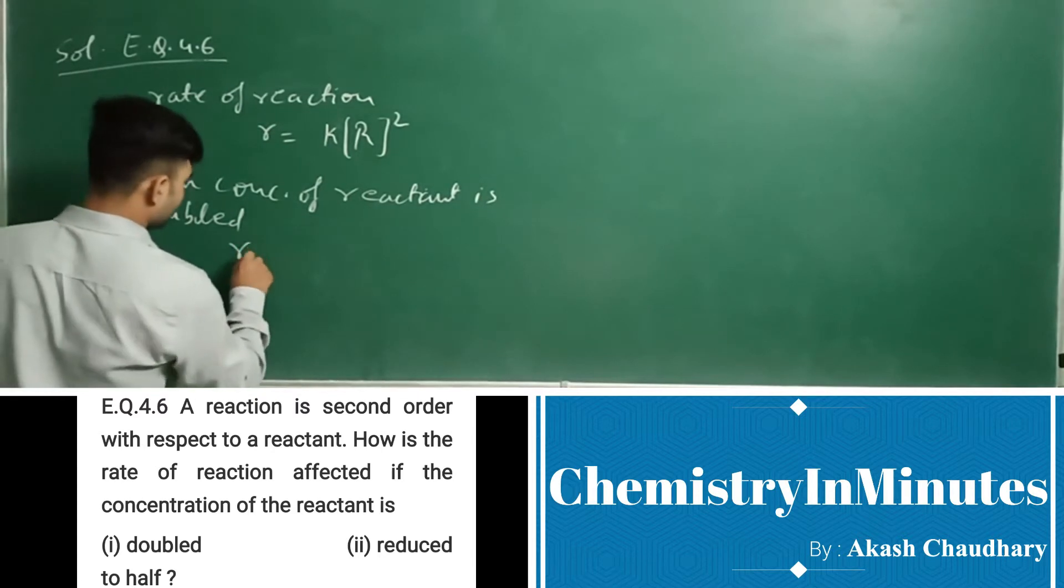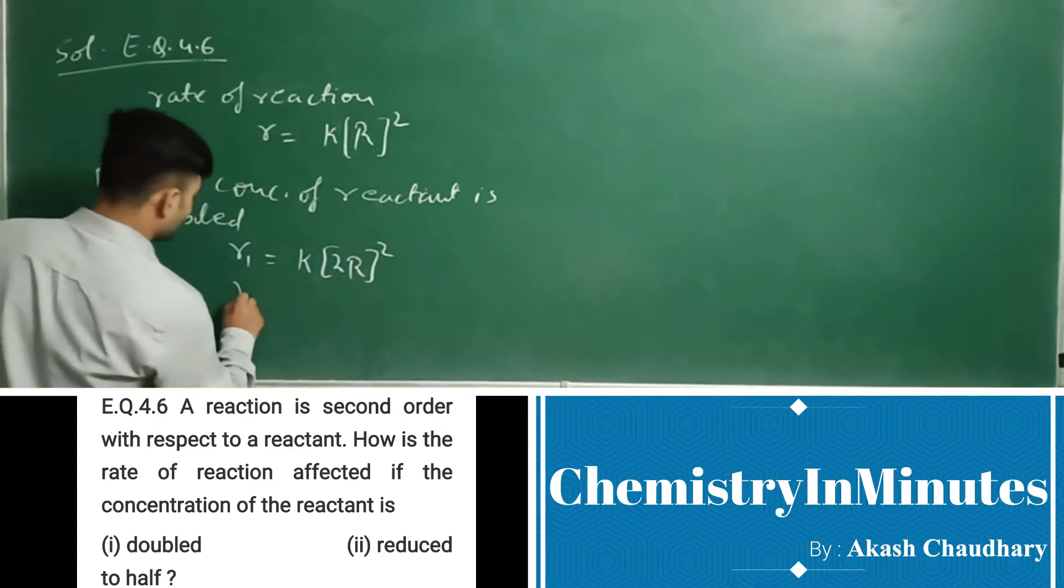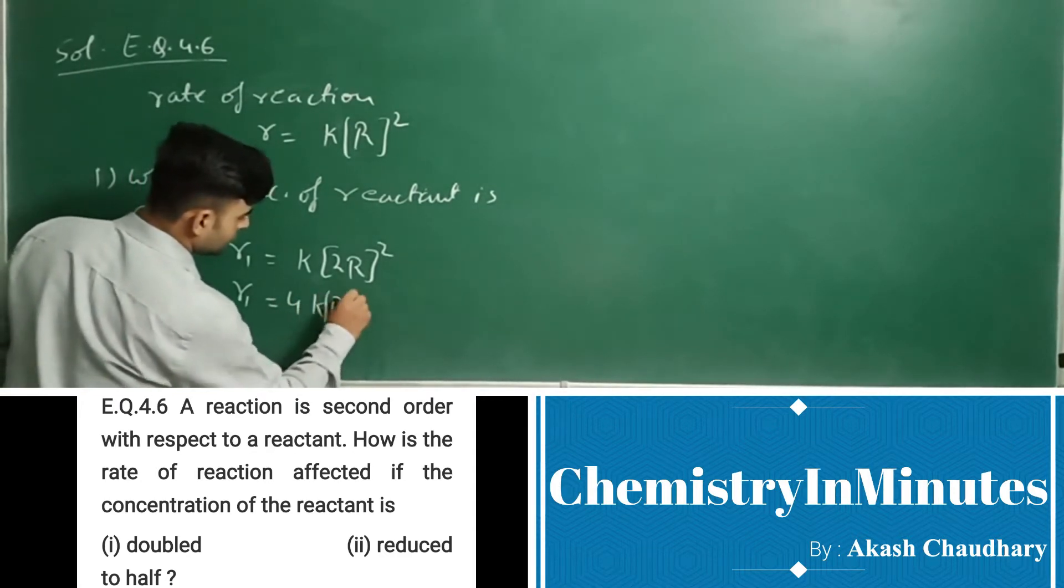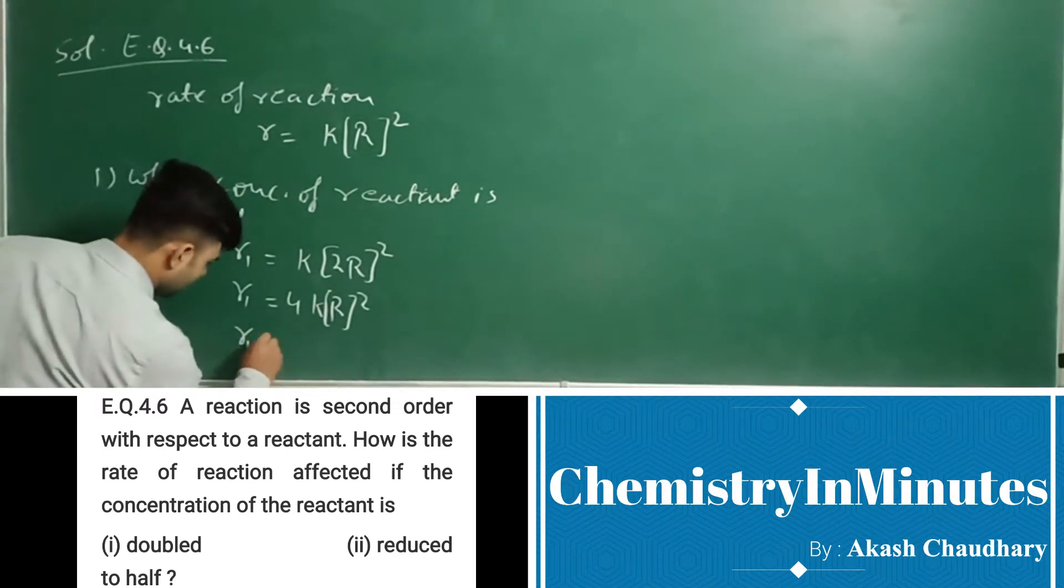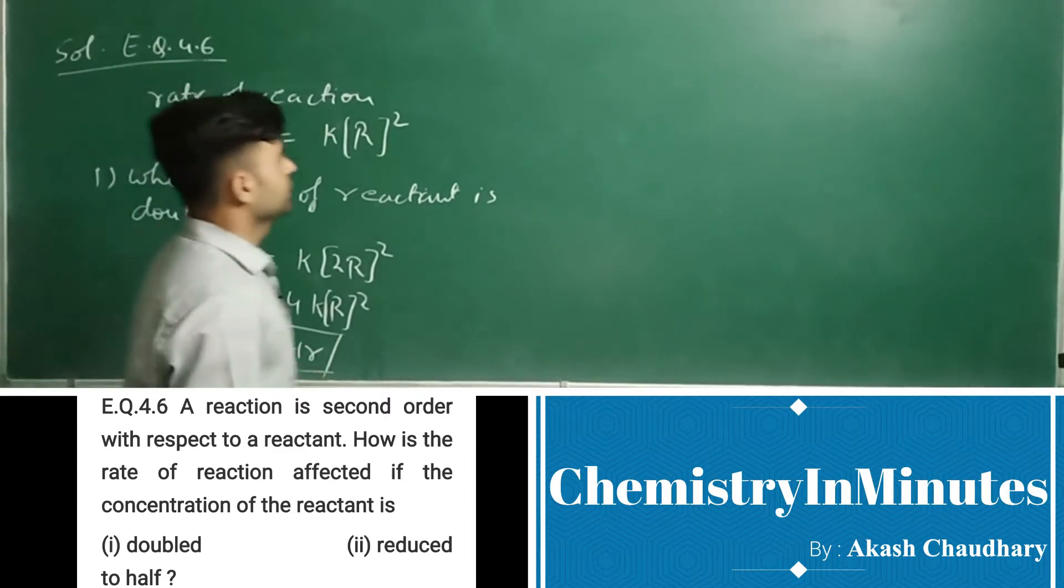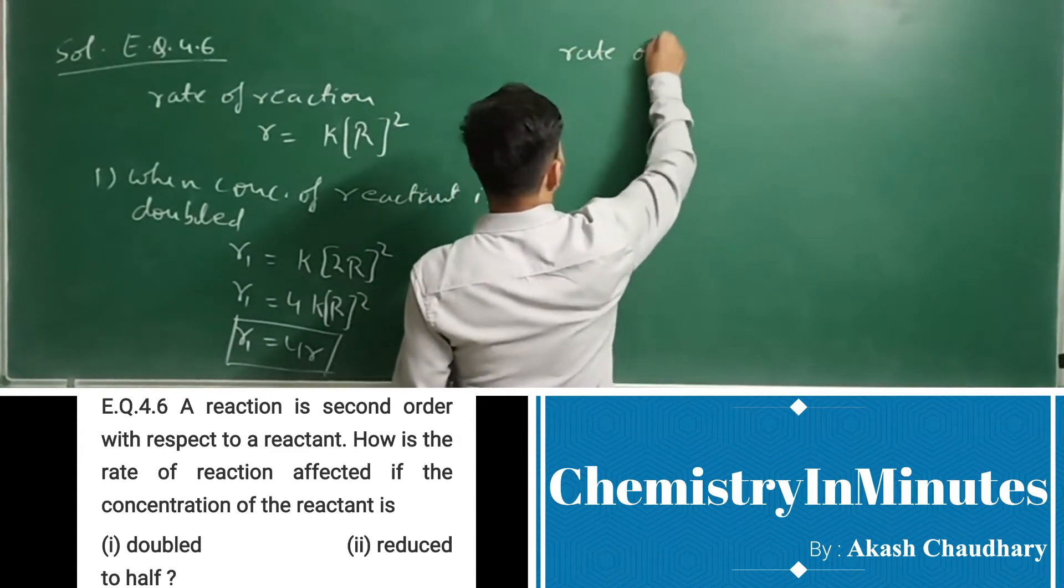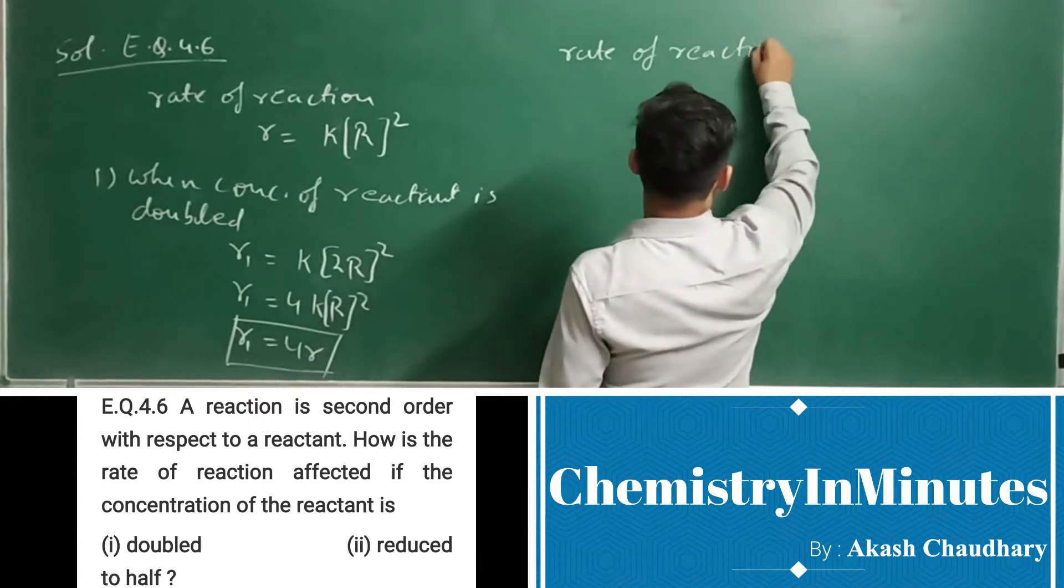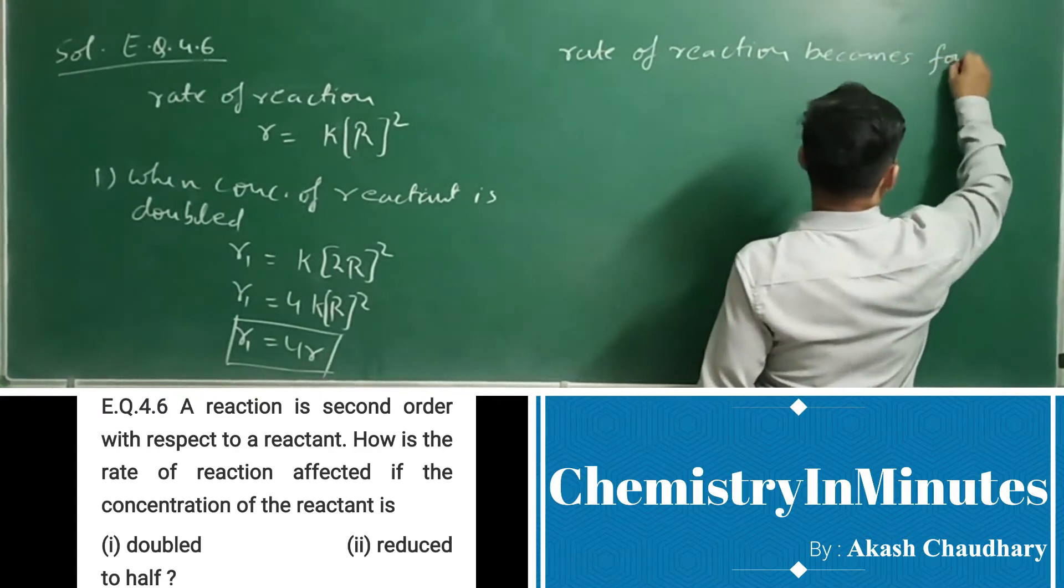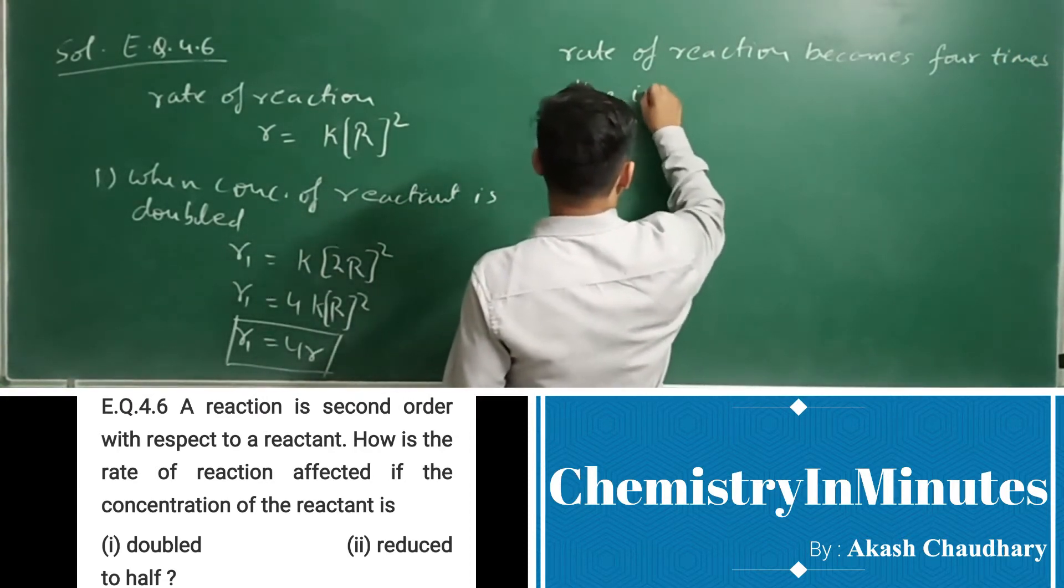So, R1 equals K times 2R whole square. R1 is equal to 4KR square. R1 equals 4R. So, here we can write: rate of reaction becomes 4 times the initial rate of reaction.